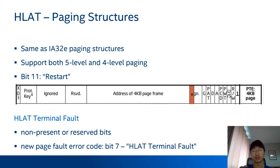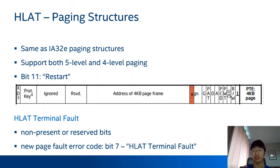HLite paging structures are almost the same as IA-32e paging structures. It supports both 5-level and 4-level paging, and bit 11 is the restart bit. Setting this bit causes the page walker to restart with the CR3 page table. During the HLite walk, the CPU raises a page fault exception if the page walker encounters a non-present entry or a misconfiguration — for example, if reserved bits are set in an HLite PTE. In that case, the CPU sets bit 7 of the page fault error code to indicate that this page fault is an HLite terminal fault.